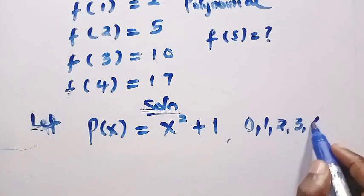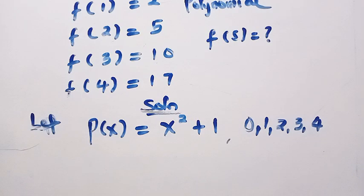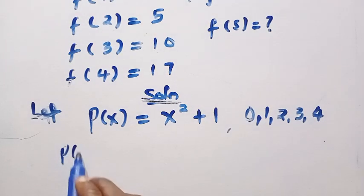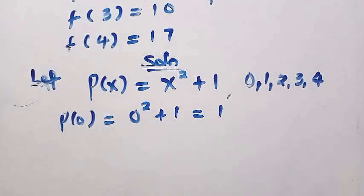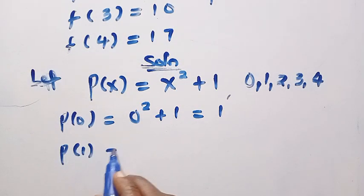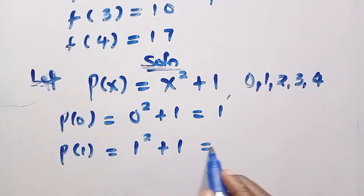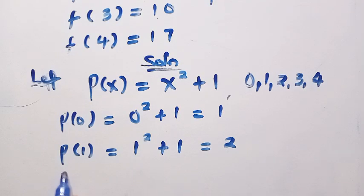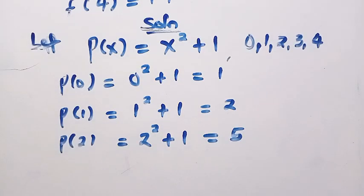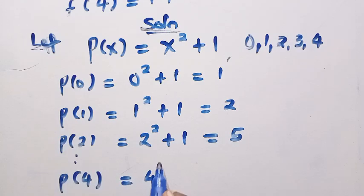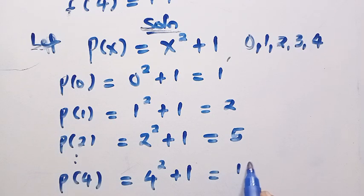If our x is 0, 1, 2, 3, 4, and others like that, if we test for p of 0, we are going to have 0 squared plus 1, and this equals 1. Again, if we test for p of 1, we are going to have 1 squared plus 1, and this equals 2. Again, if we test for p of 2, we have 2 squared plus 1, that gives us 5. This is how this continues. We get to p of 4. If we test for p of 4, we have 4 squared plus 1, and this gives us 17. This is how it continues.